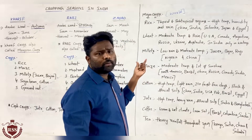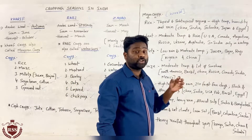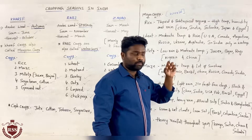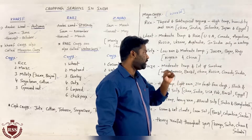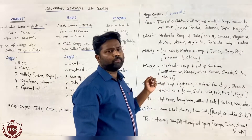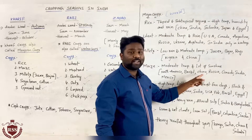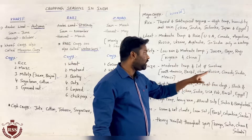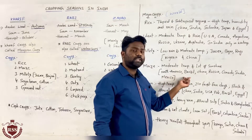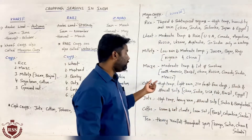For growing maize also, we need moderate temperatures, but here we need a lot of sunshine. Temperature moderate is enough, but sun rays are most important — a lot of sunshine is required. The countries majorly growing maize are North America, Brazil, China, Russia, Canada, India, and Mexico.